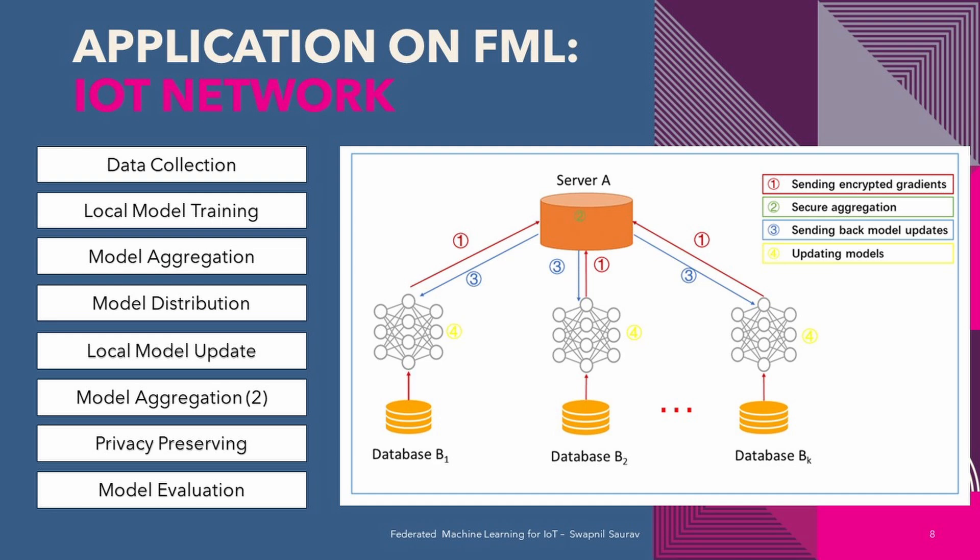Federated machine learning can be applied in IoT networks to facilitate the collaborative training of machine learning models using data from multiple IoT devices. Step one is data collection — IoT devices collect data from their respective environments, such as sensor data or user behavior data. Step two is local model training — each IoT device locally trains a machine learning model using the data it has collected, using methods like gradient descent or stochastic gradient descent. Step three is model aggregation — the local models from different IoT devices are sent to a central server, which aggregates them and creates a global model. Step four is model distribution — the central server distributes the global model to the IoT devices in the network.